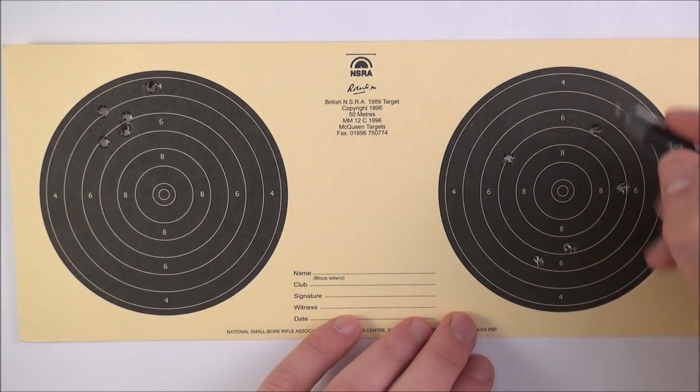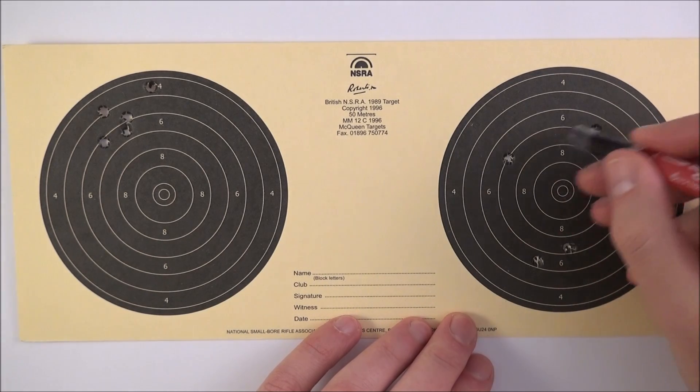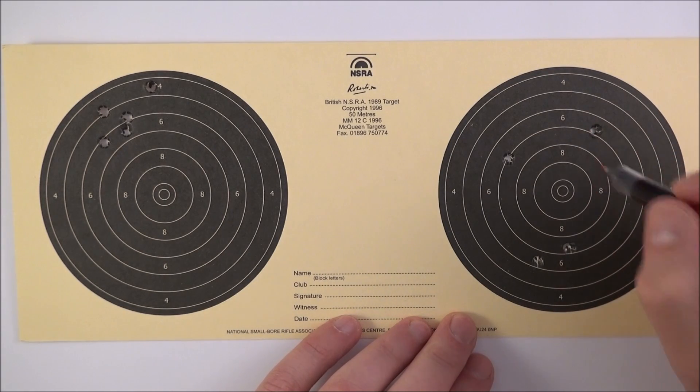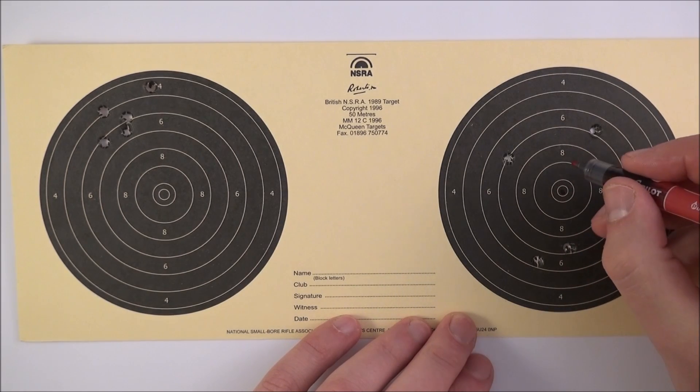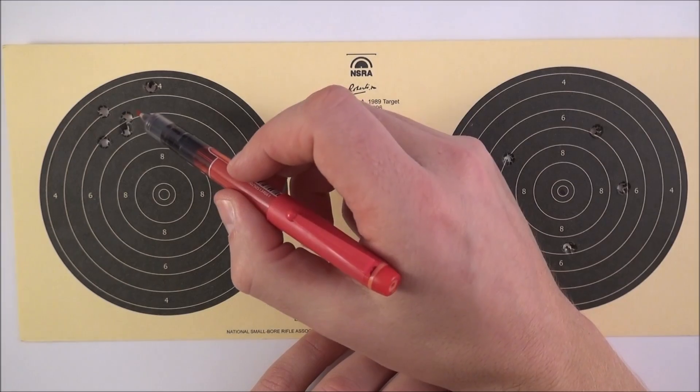On the right-hand side, however, the grouping size is a lot larger, but the mean point of impact, the average position where these rounds land, is dead on the center of the target. Over here we have some accurate shooting, whereas over here the shooting is precise.